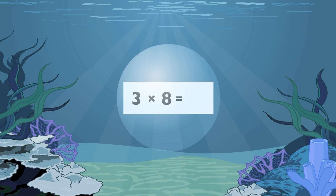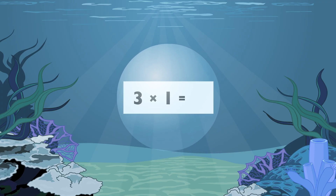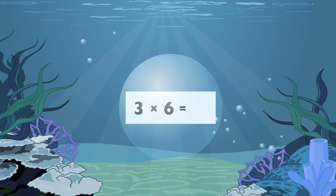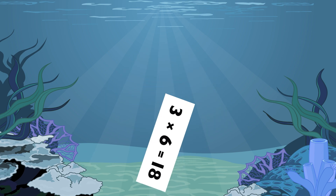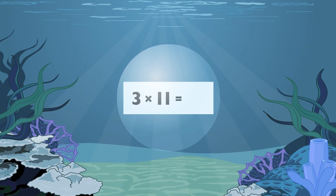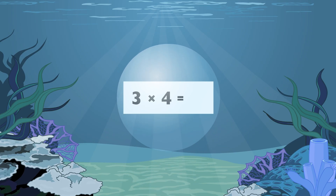Three times eight equals twenty-four. Three times one equals three. Three times six equals thirty-three. Three times eleven equals thirty-three. Three times four equals twelve.